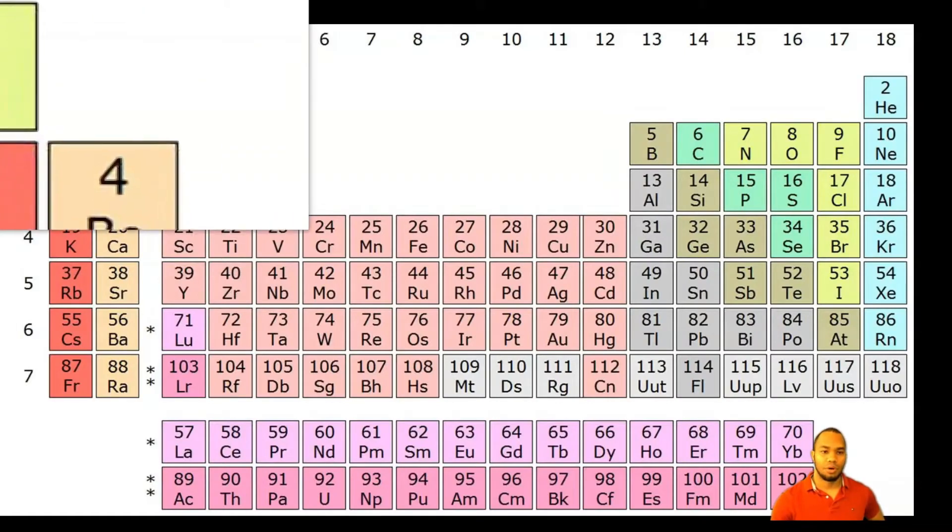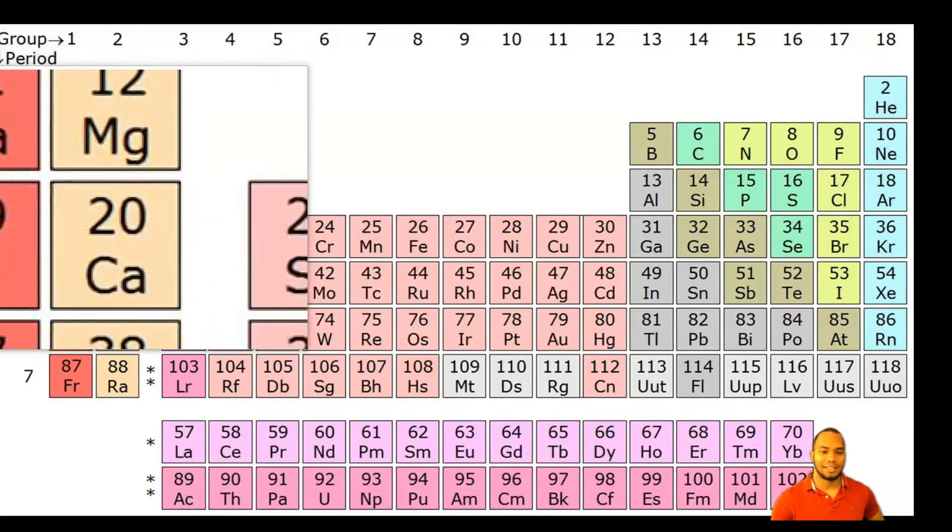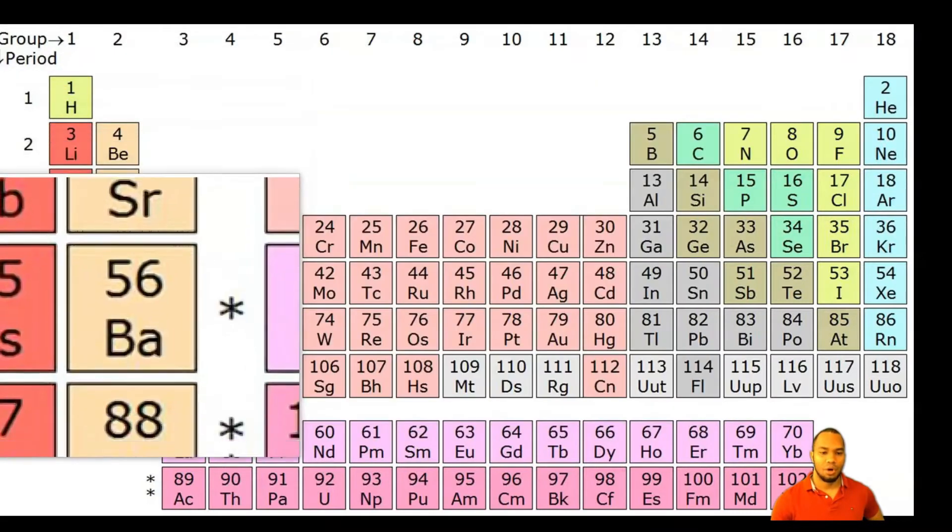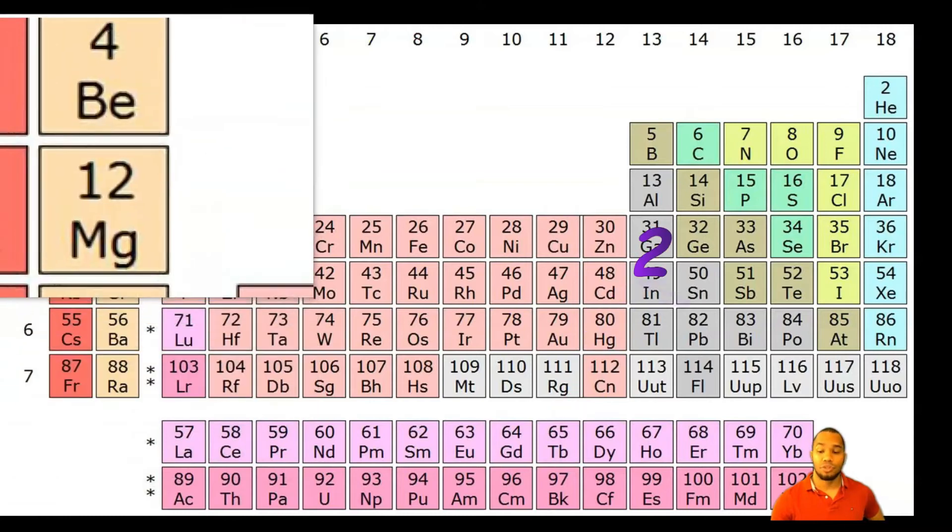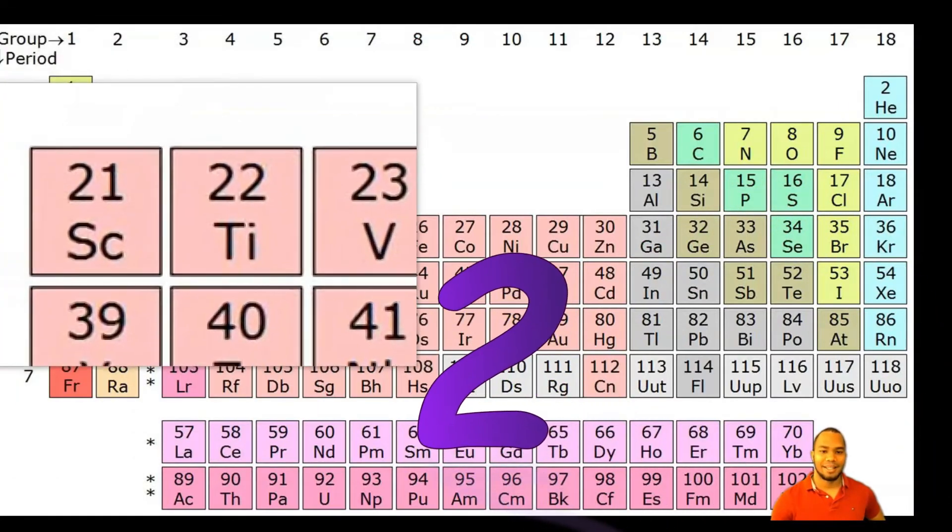The elements in group two - beryllium, magnesium, calcium - all these elements have two valence electrons.